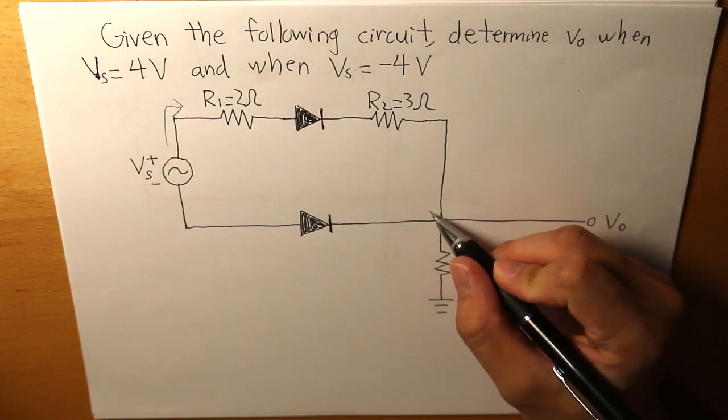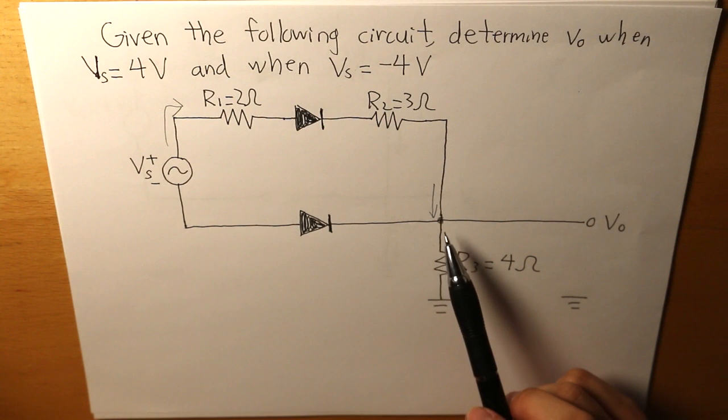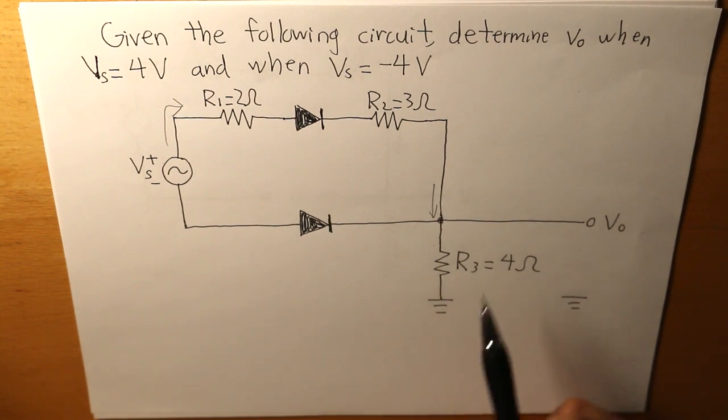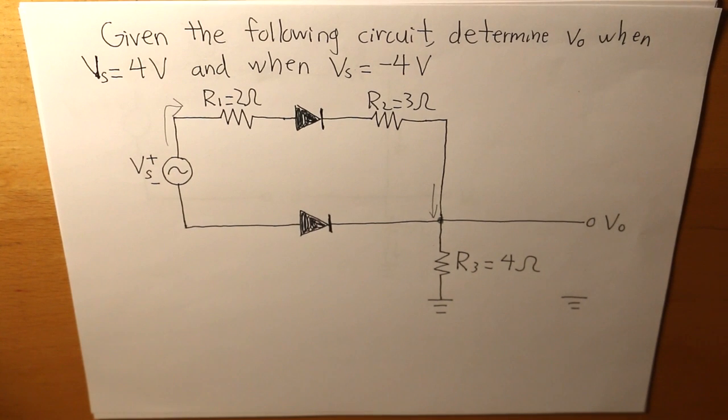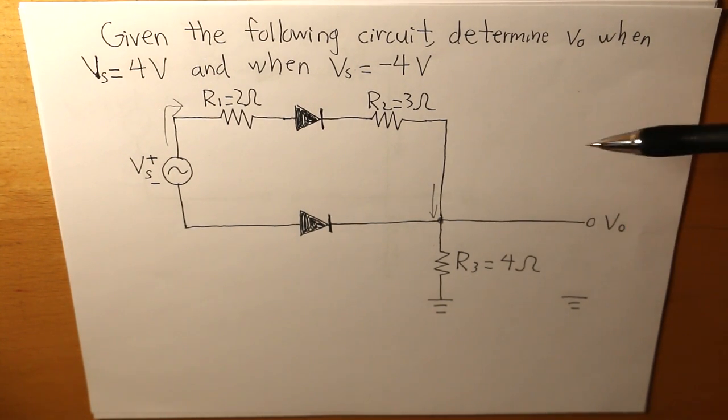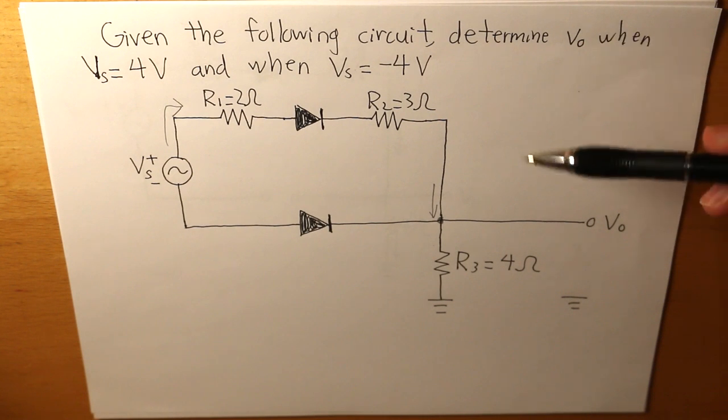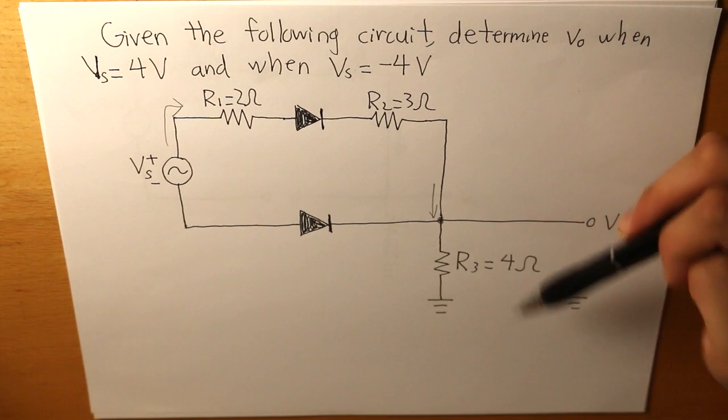And then it enters this particular node. And it can enter two different paths. It can go through this path or down to this path. And understanding the laws of diodes, it has to travel to the ground through R3.